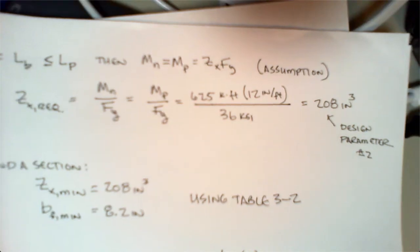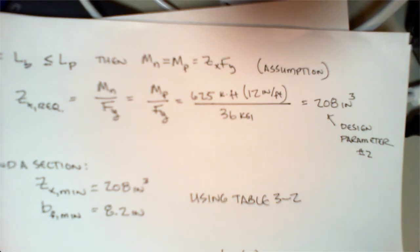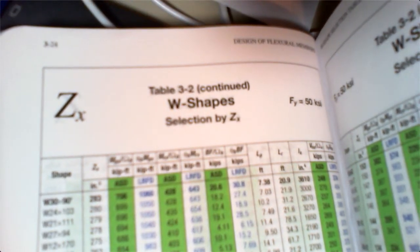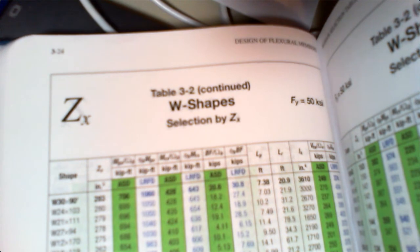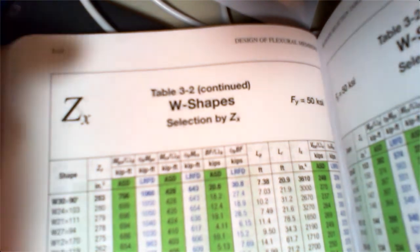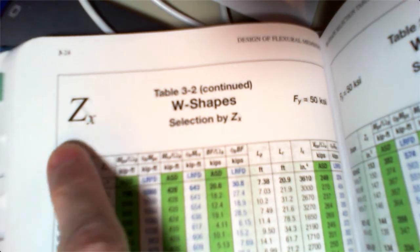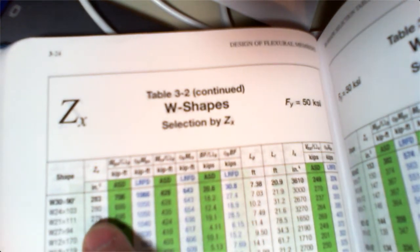Our design parameters now become: Zx minimum 208 inches cubed, and bf minimum 8.2 inches. We're going to jump into Table 3-2, those are the Zx tables. If you remember from the last video, this is the table. I'm actually a few pages back, and we'll show you why that is.